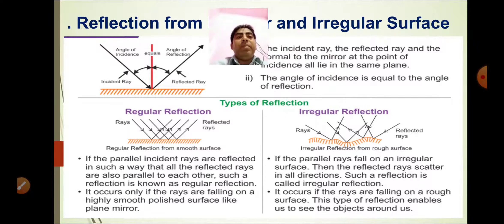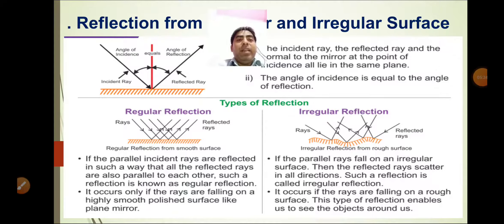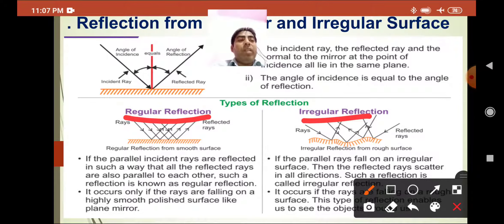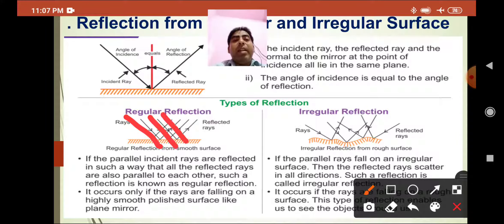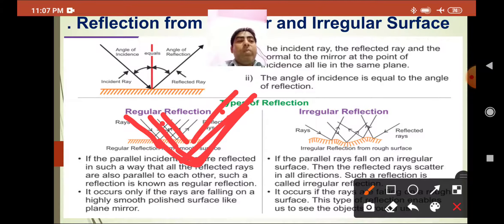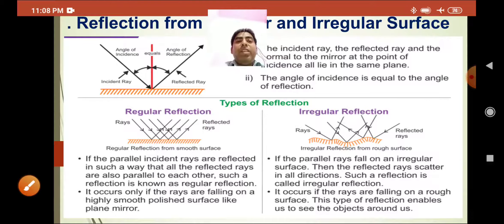There are two types of reflection: regular reflection and irregular reflection. In regular reflection, parallel incident rays are reflected in such a way that all the reflected rays are also parallel. This occurs only when the rays fall on a highly smooth polished surface, like a plane mirror. The reflection of light rays from a smooth shiny surface is regular and in one direction — such a reflection is called regular reflection.